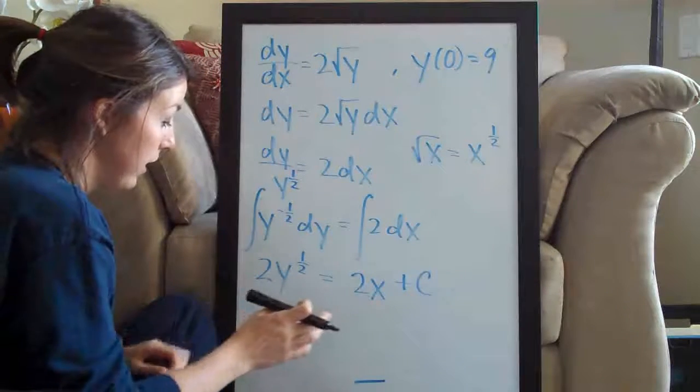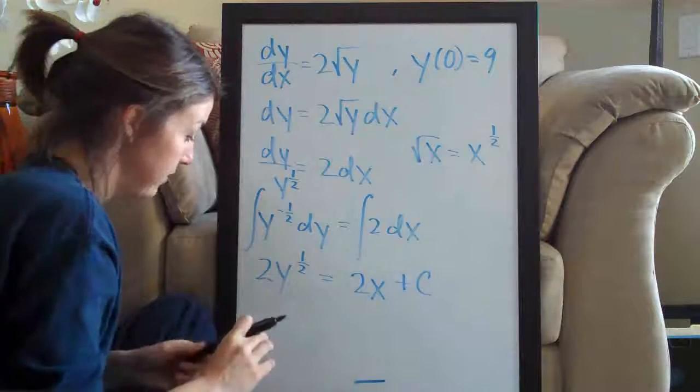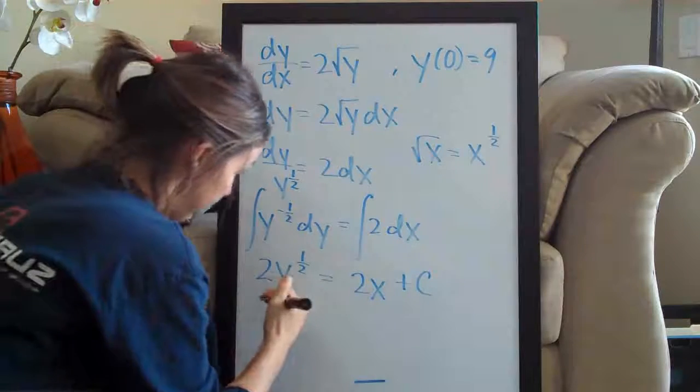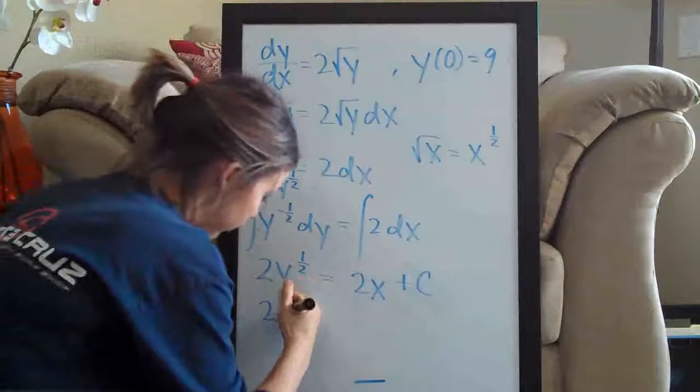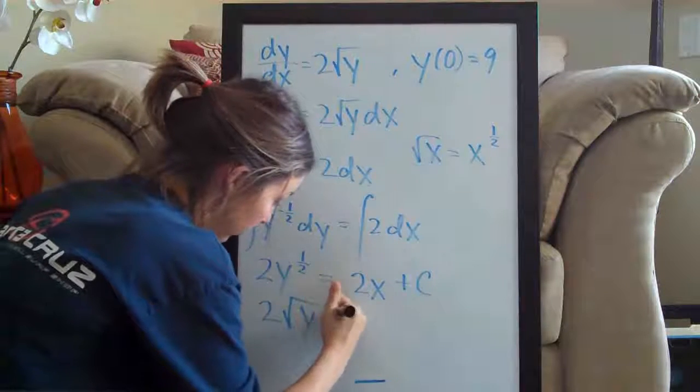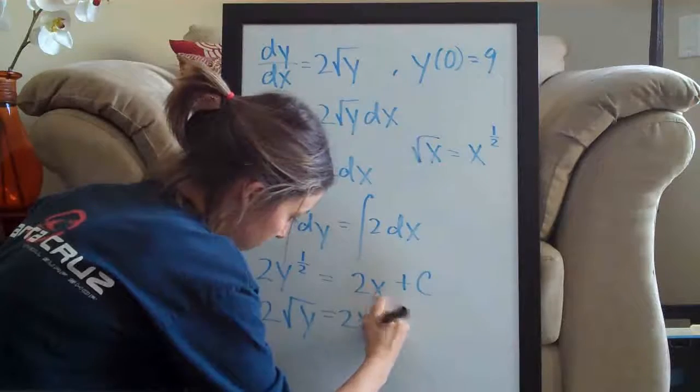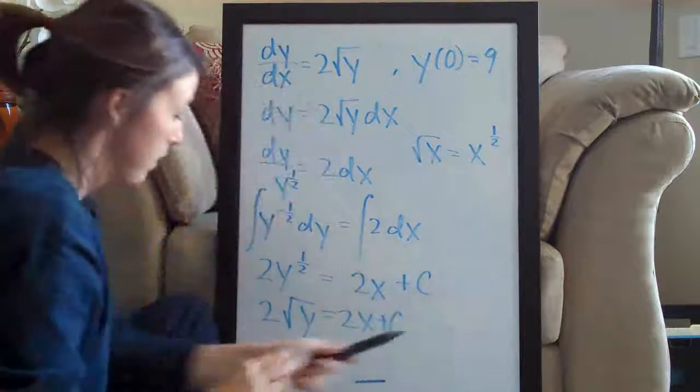So go ahead and do that. Now that we've integrated, we can simplify this. I'm just going to change y to the one half back to the square root of y, so it's a little easier to look at: 2 times the square root of y equals 2x plus C.